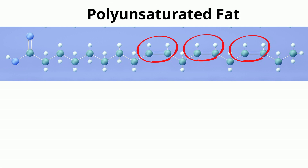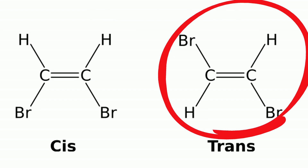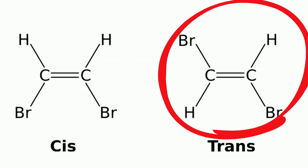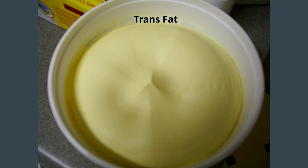An unsaturated fat that has the hydrogen atoms on opposite sides of the carbon is called a trans fat. This creates a structure that is more similar to a saturated fat and results in an unsaturated fat that is solid at room temperature.